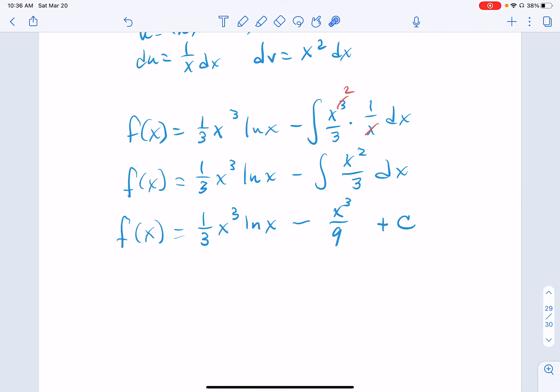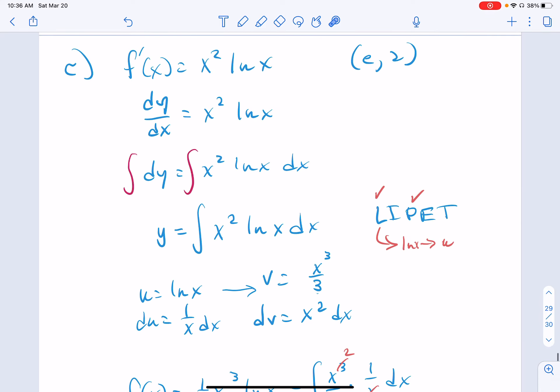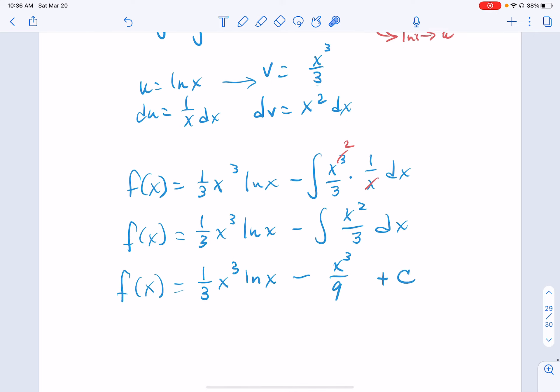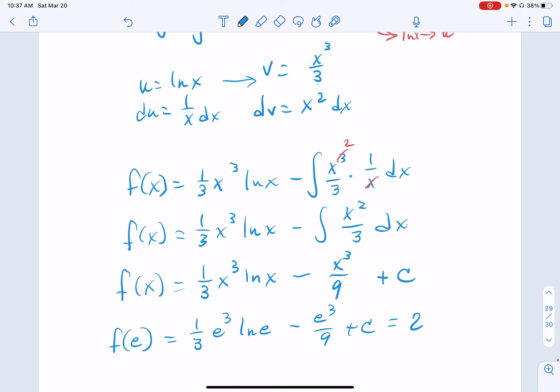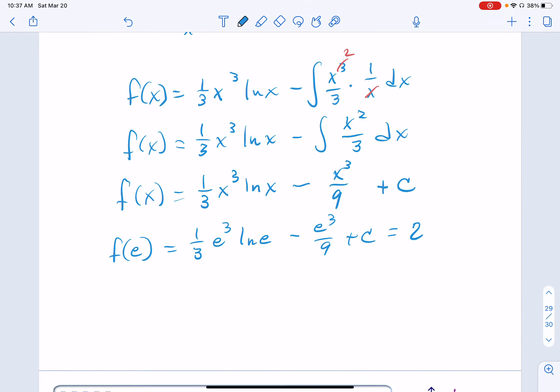Now let's use our initial condition of e comma 2 right here. Plug in our e. F of e should be equal to 1 third e cubed natural log of e minus e cubed over 9 plus c. All of this is supposed to be equal to a 2. Is that correct? Yes. All right.